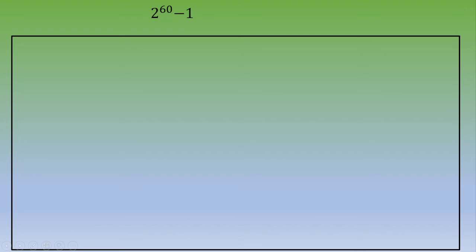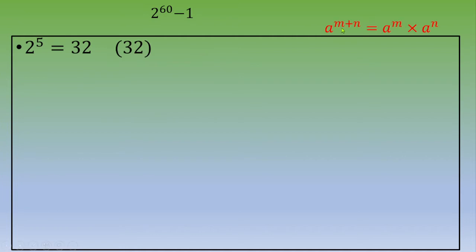We begin with 2 to a nice multiple of 5. Let's begin with 2 power 5, which equals 32. Now I'm going to raise the power gently using the rule: a power (m + n) equals a power m times a power n. Every time, we will focus on the last two digits.